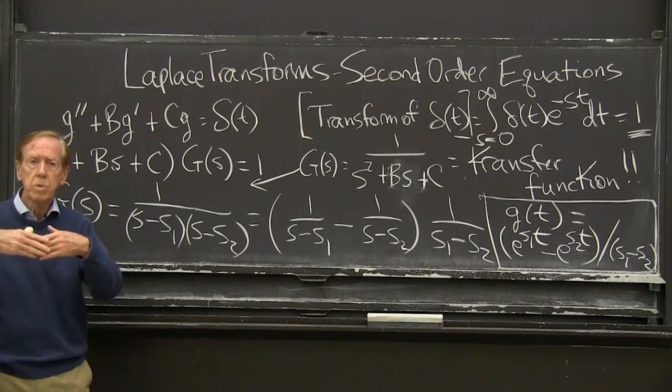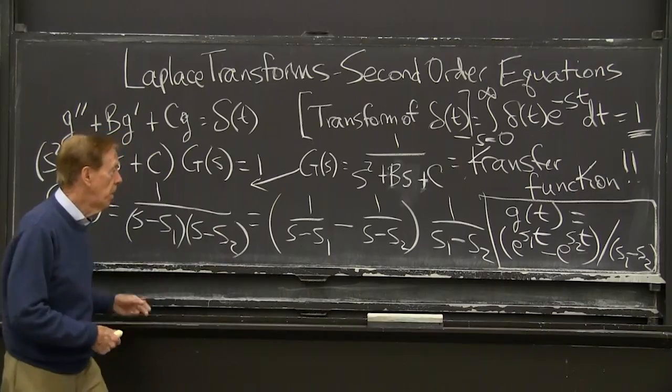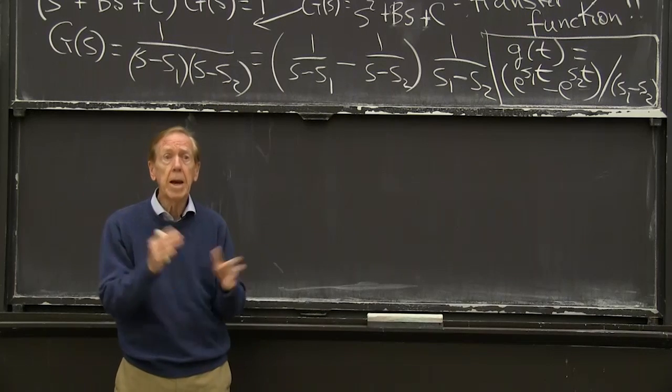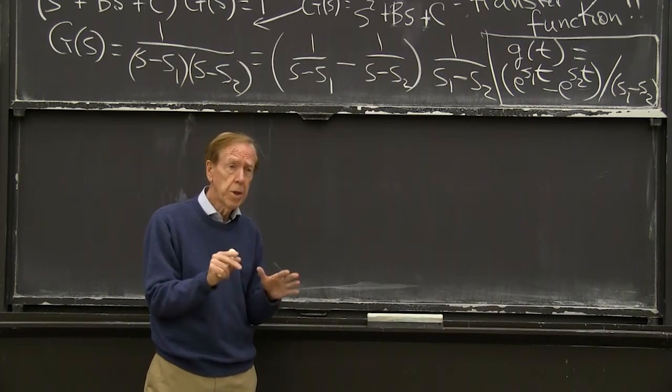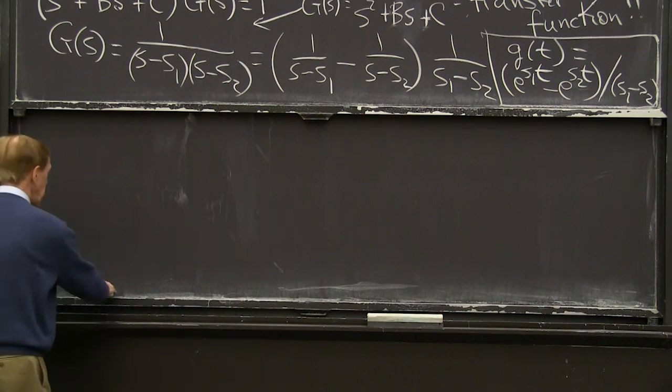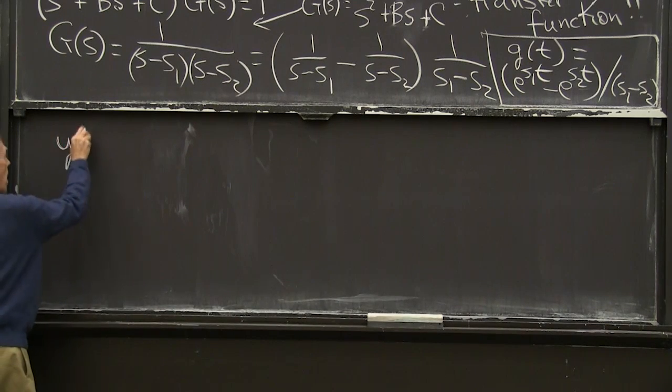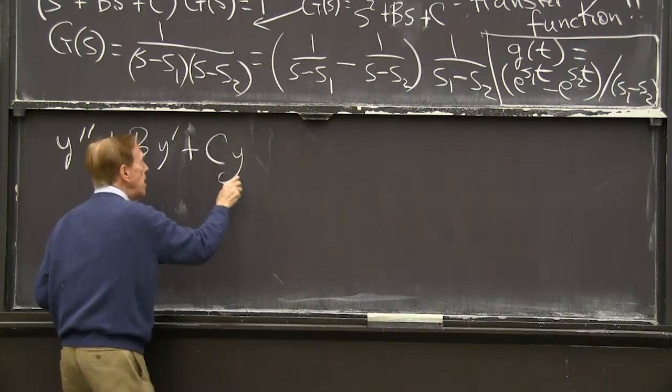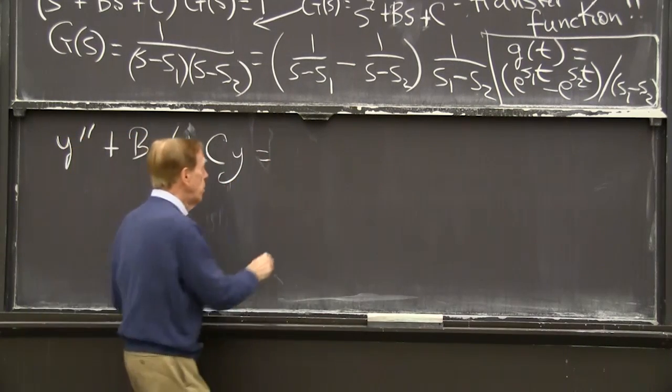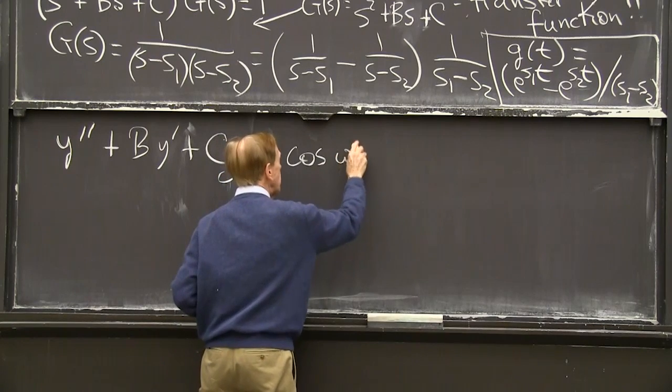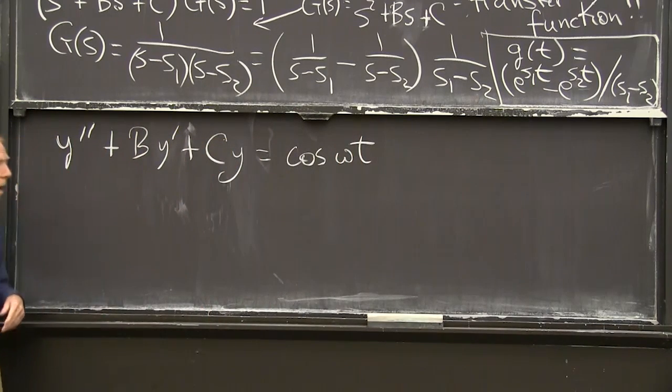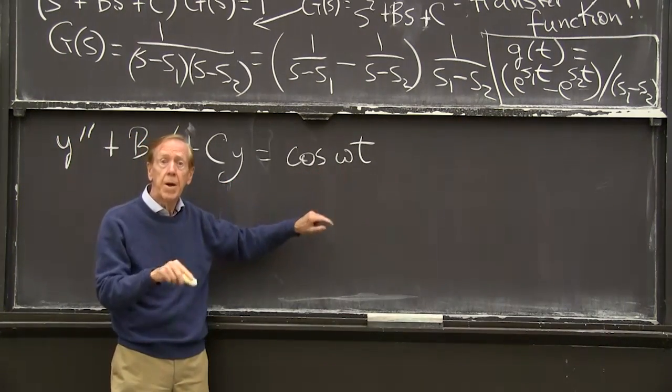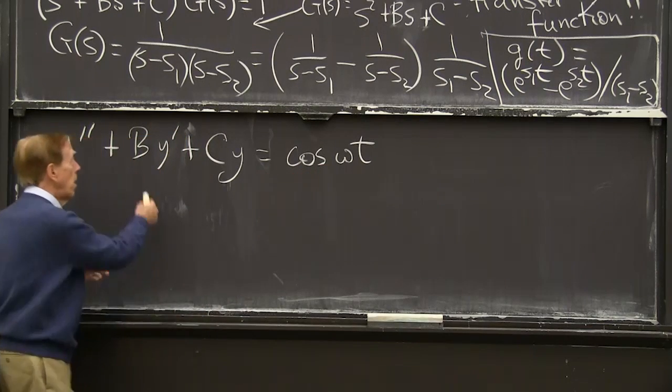And now I just want to take another function than delta. I could go all the way to take f of t, any f of t, but let me stay with examples. So now I'm going to do y double prime plus by prime plus cy. Now, the most important example. The best one we could do would be cosine of omega t, an oscillating problem with an oscillating force at a frequency different from the natural frequency. And we also have damping there.